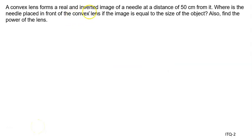A convex lens forms a real and inverted image of a needle at a distance of 50 cm from it. We know if it is a convex lens, the real and inverted image will be on the other side of the lens and this distance is given to us as 50 cm. It means V is given to us plus 50 cm.